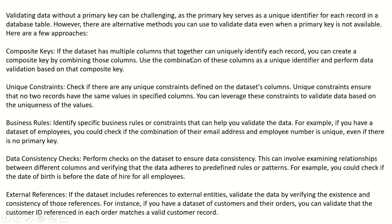You can create a composite key by combining those columns. Use the combination of these columns as a unique identifier and perform data validation based on the composite key. The second approach is unique constraints — check if there are any unique constraints defined on the dataset's columns. Unique constraints ensure that no two records have the same values in specified columns. You can leverage these constraints to validate data based on the uniqueness of the values.